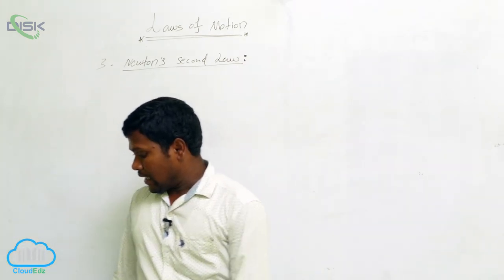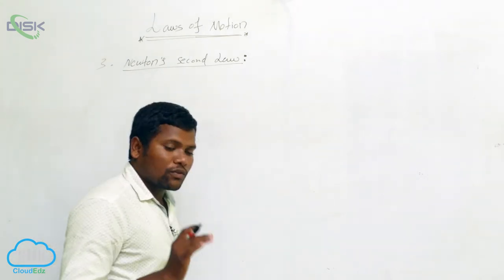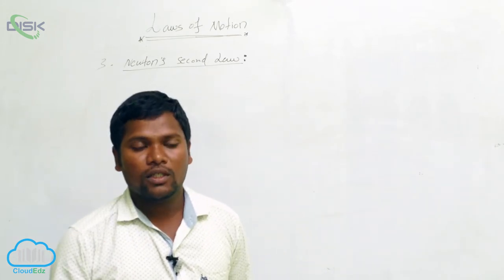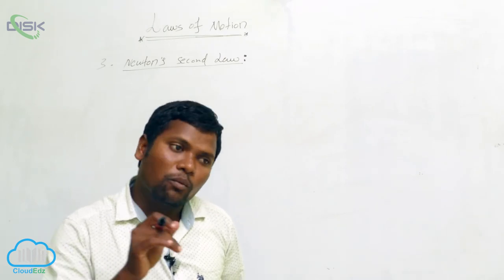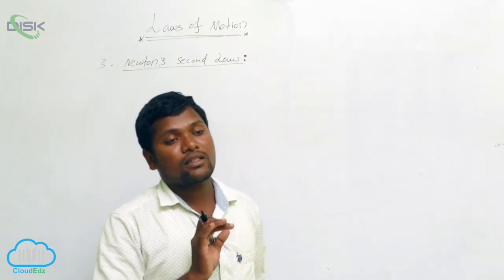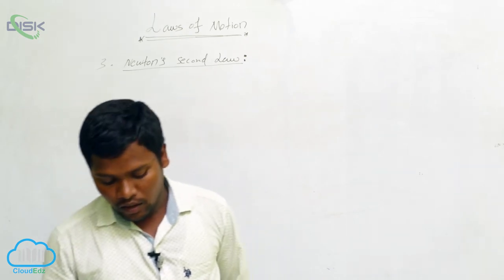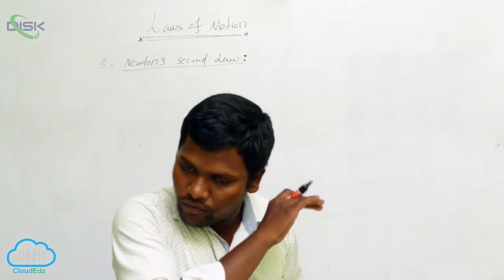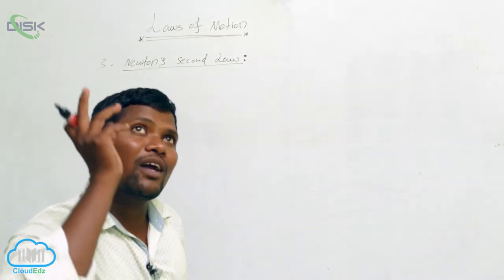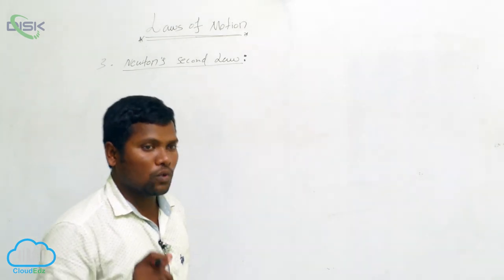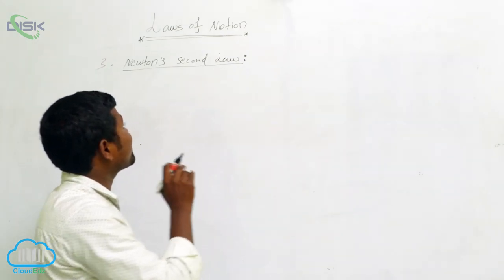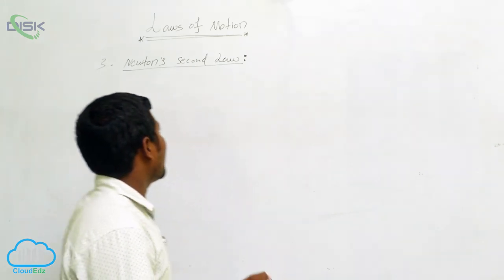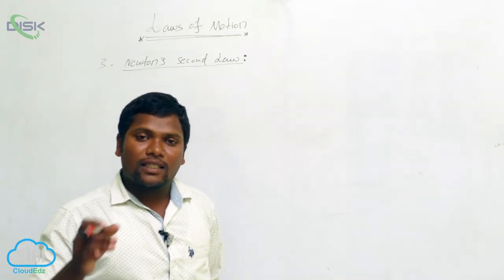Now, what is Newton's second law? If an object wants to move, what do you need? Definitely you need force. The topic is motion — when will an object be in motion? You have to apply some force. Without applying force, no object will move automatically. That may be nuclear force, human force, gravitational force, or electrostatic force — without force, no object in this world will move.